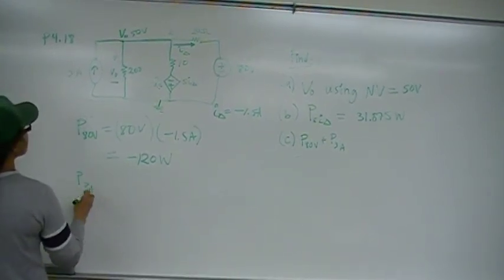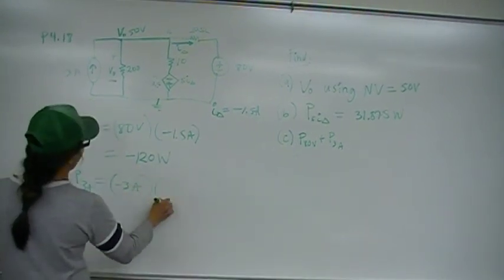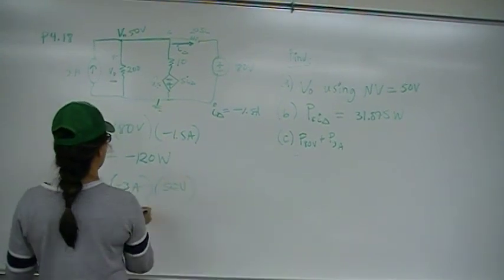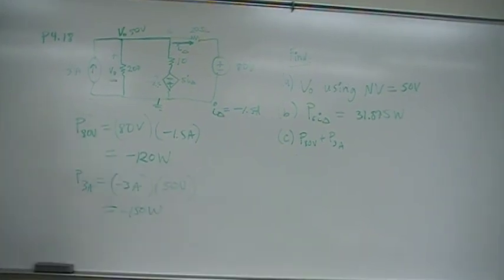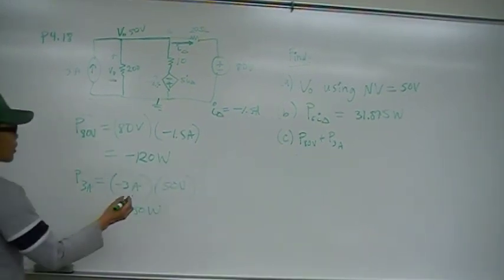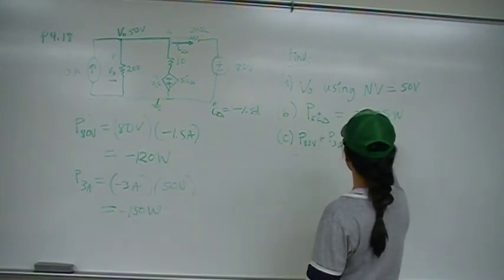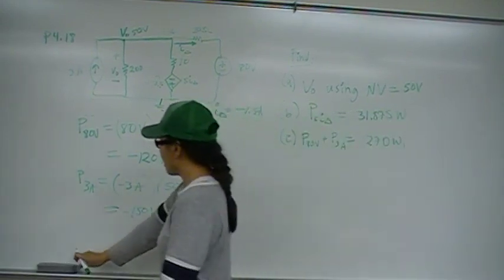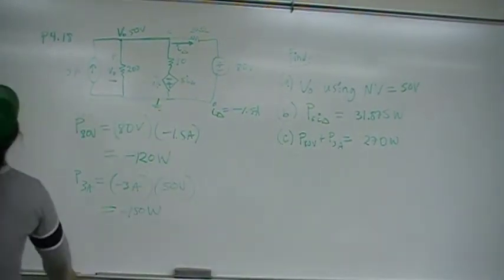And for the 3 amps, we have, of course, negative 3 amps times V out which is 50 volts. And that is negative 150 watts that the 3 amp current source is delivering to this circuit. So, the total that's being delivered is going to be 270 watts delivered. And that concludes number 18.